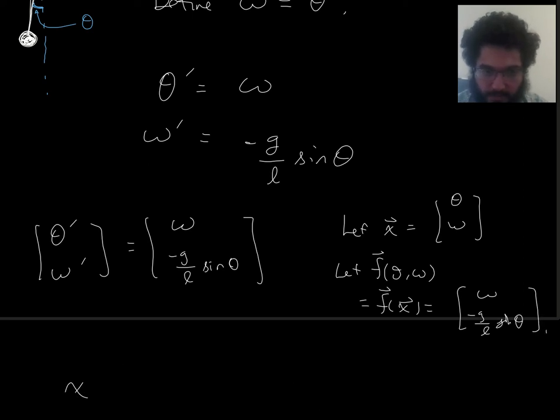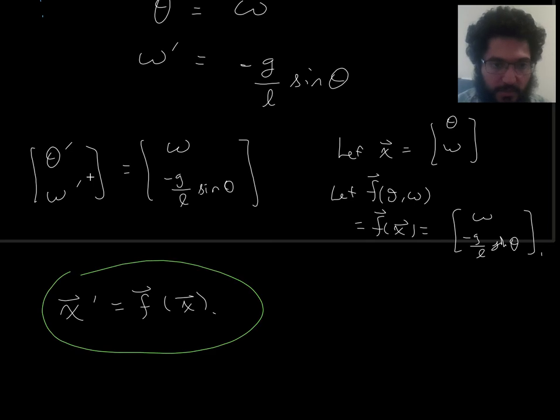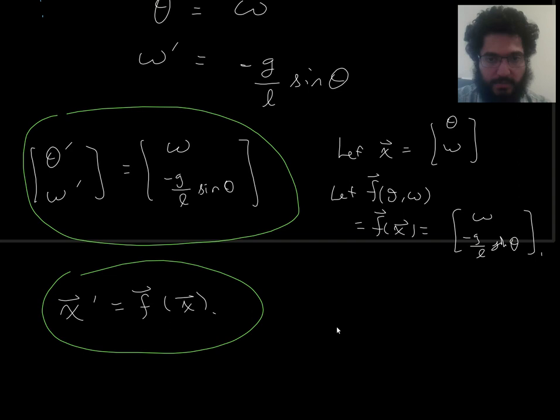So then our differential equation system looks like this: x prime equals f of x. This is an autonomous system of differential equations. So I hope you're seeing that this is just another way of writing this. There are two ways of writing the same thing, if you accept these definitions of the symbols. All right, so we have our autonomous system of differential equations, and in the next video let's look at how we can do a critical point analysis for this.